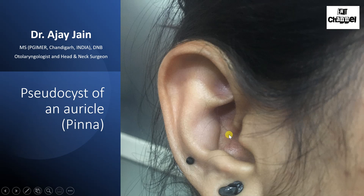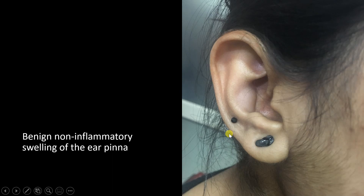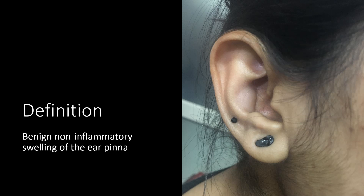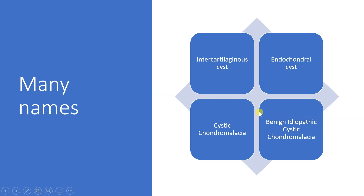Auricle means pinna. By definition, it is a benign non-inflammatory swelling of the ear pinna. It has been known by various names like intracartilaginous cyst, endochondral cyst, cystic chondromalacia, and benign idiopathic cystic chondromalacia.